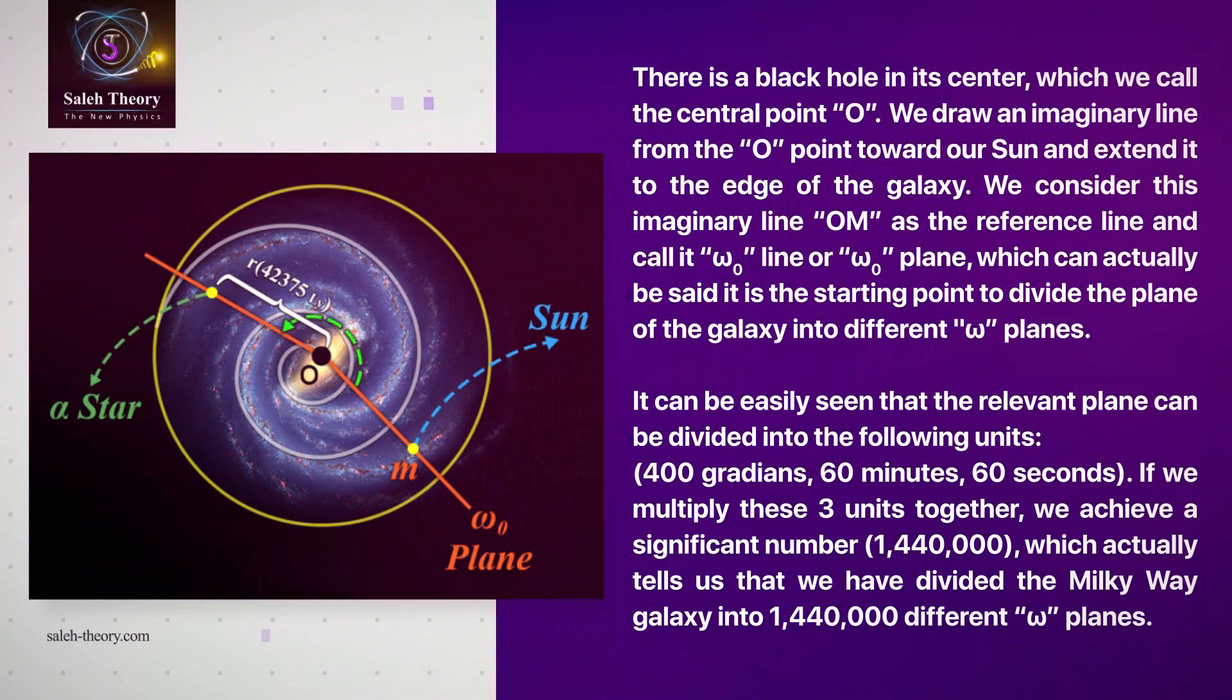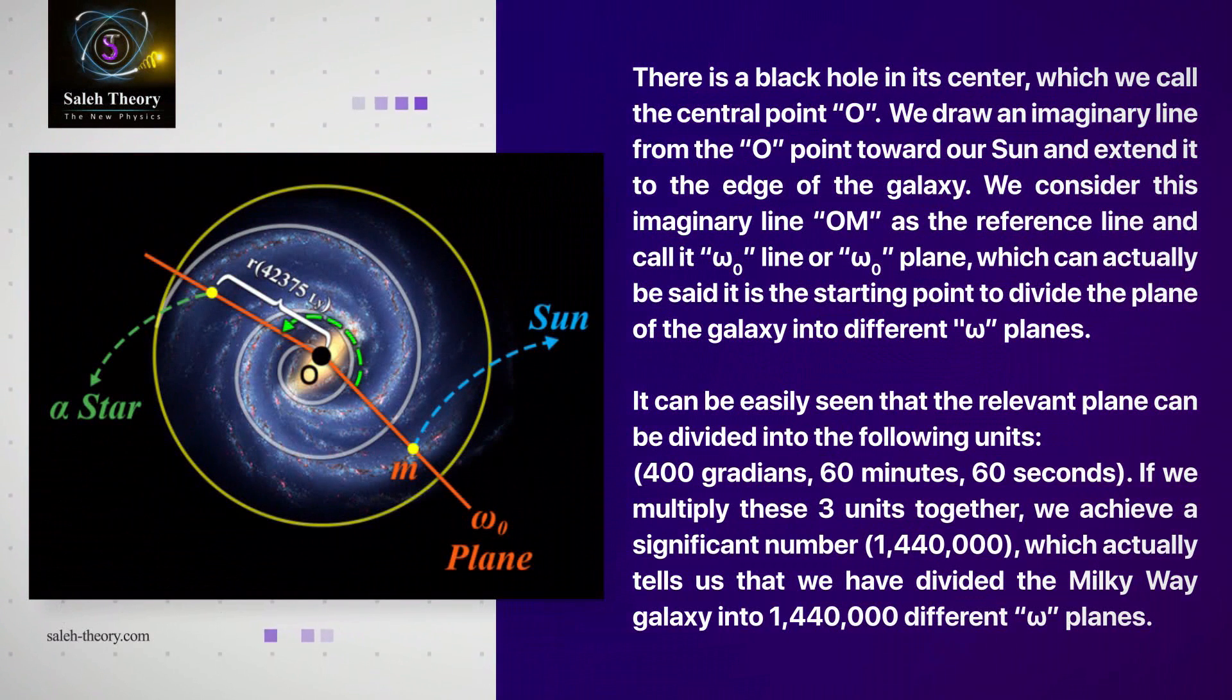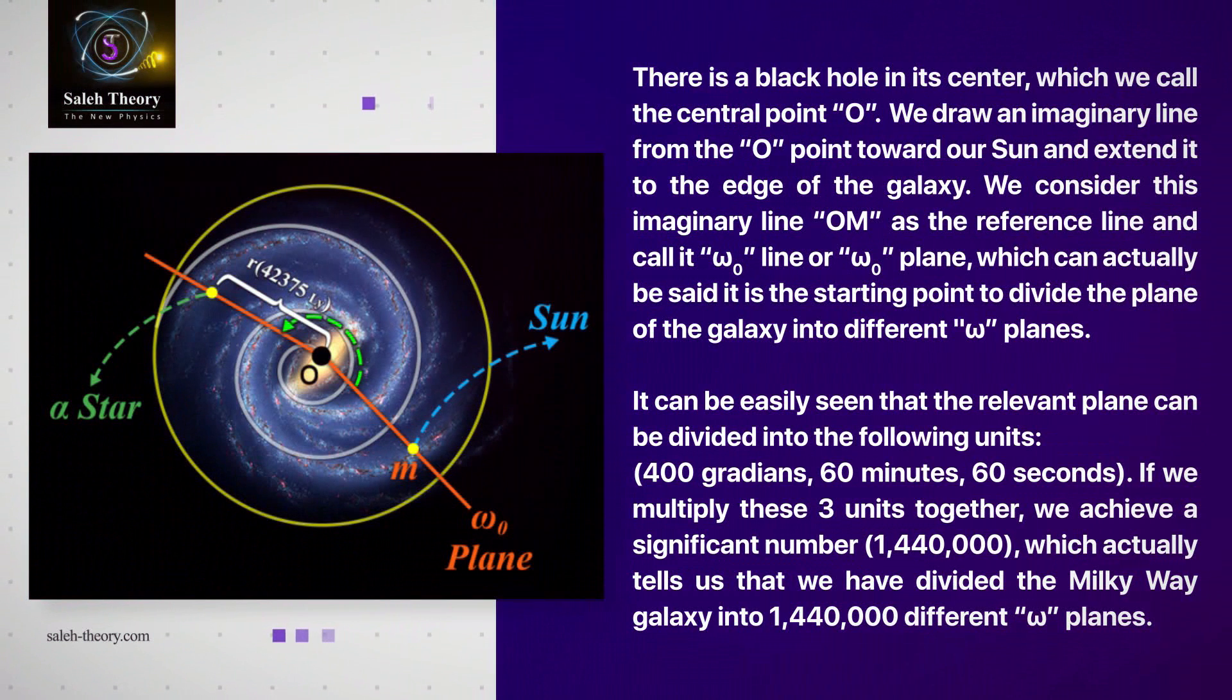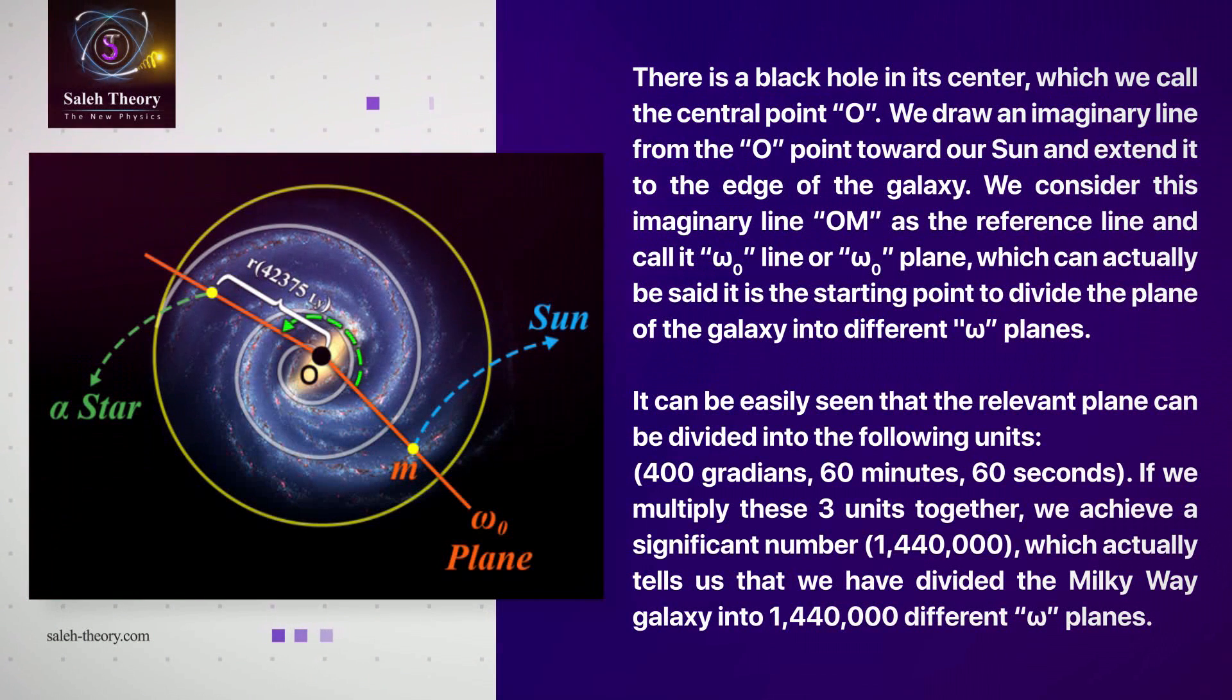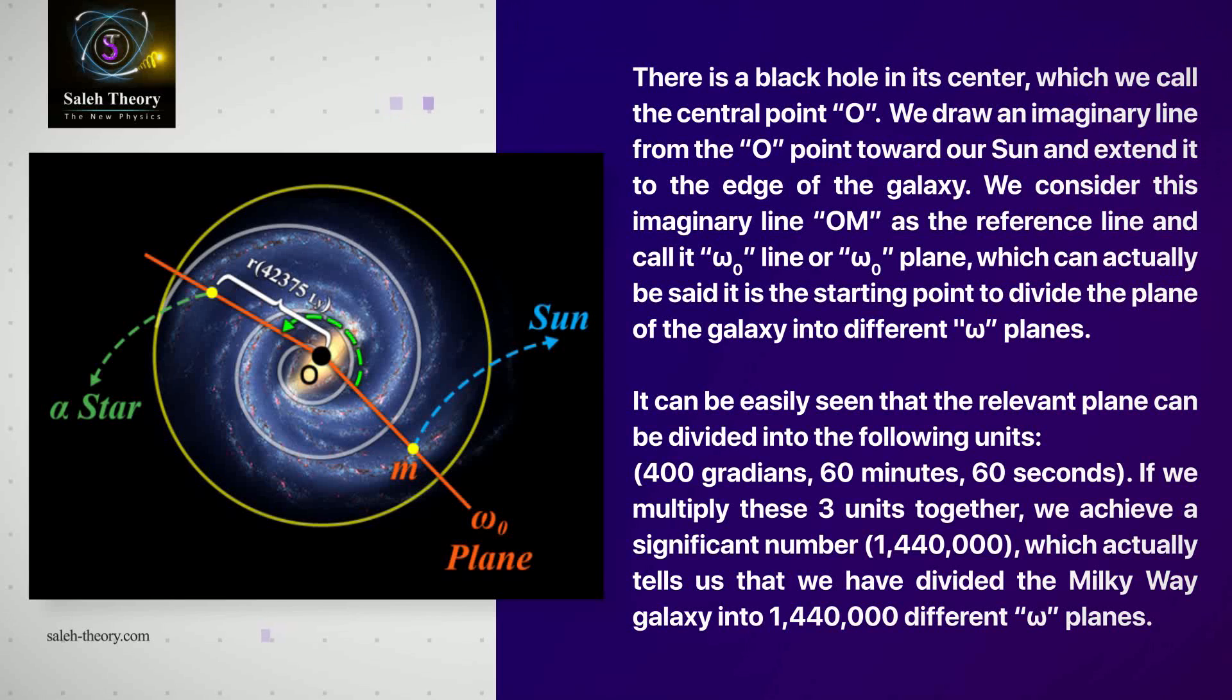We consider this imaginary line OM as a reference line and call it omega zero line or omega zero plane, which can actually be said is the starting point to divide the plane of the galaxy into different omega planes.